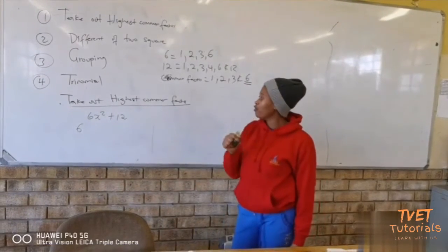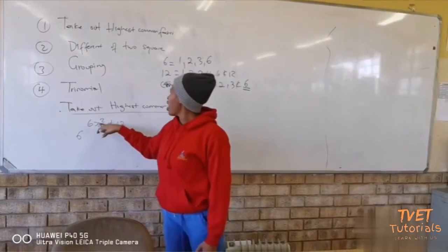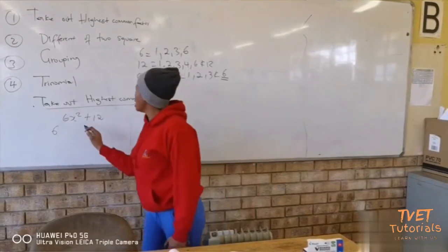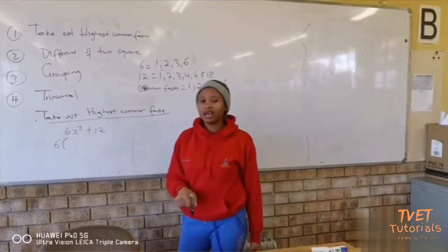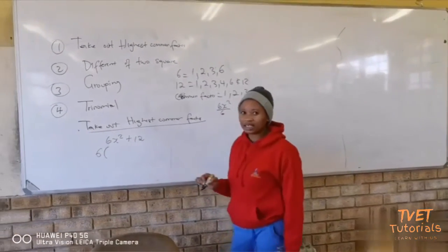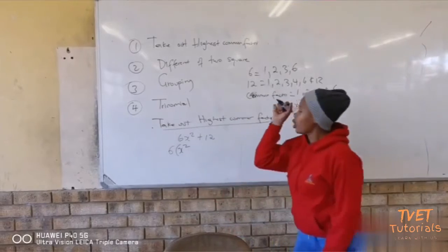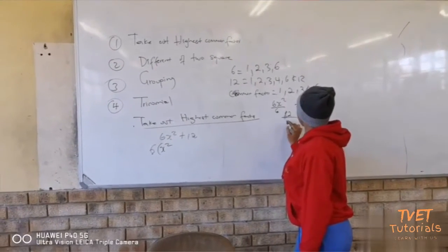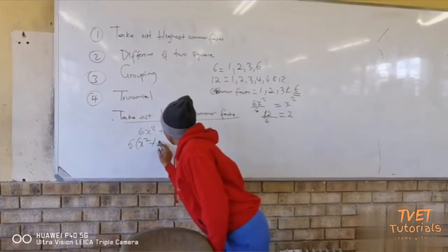We take out 6 as the highest common factor. We have a variable x squared, but we don't have x in the second term, so x is not a common factor. Then we open the bracket. We ask ourselves: 6 goes how many times into 6x squared? That is 6x squared divided by 6, which gives us x squared. Then 12 divided by 6 gives us 2.